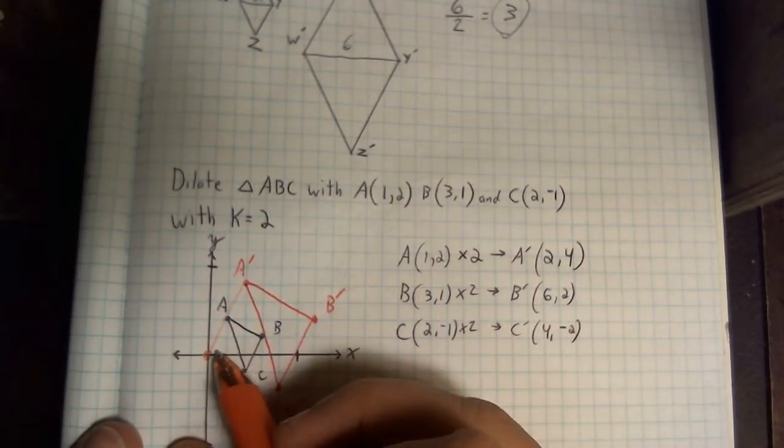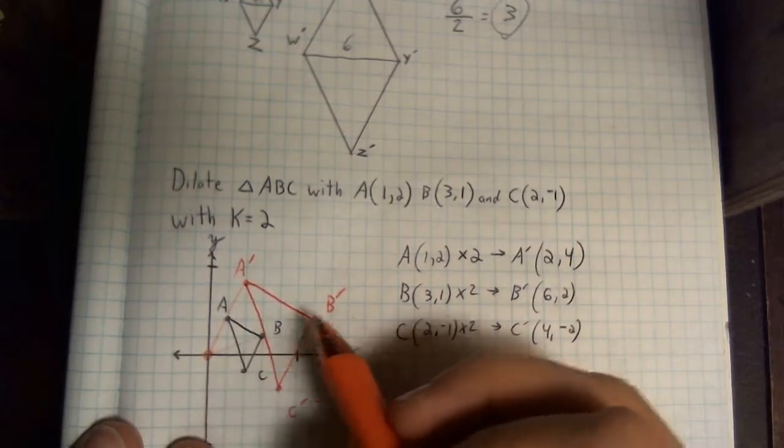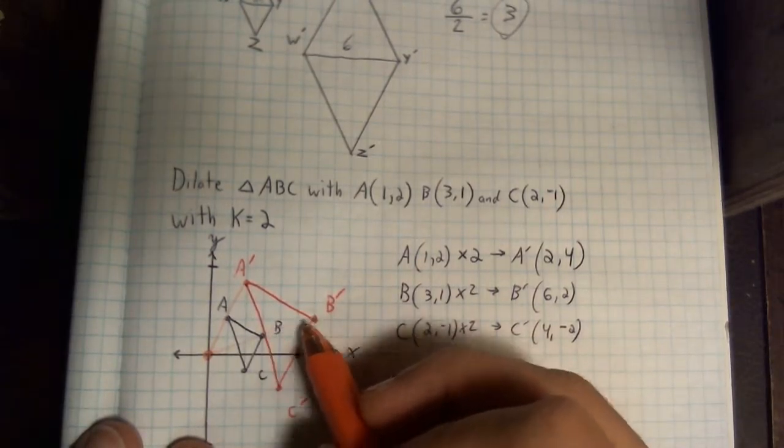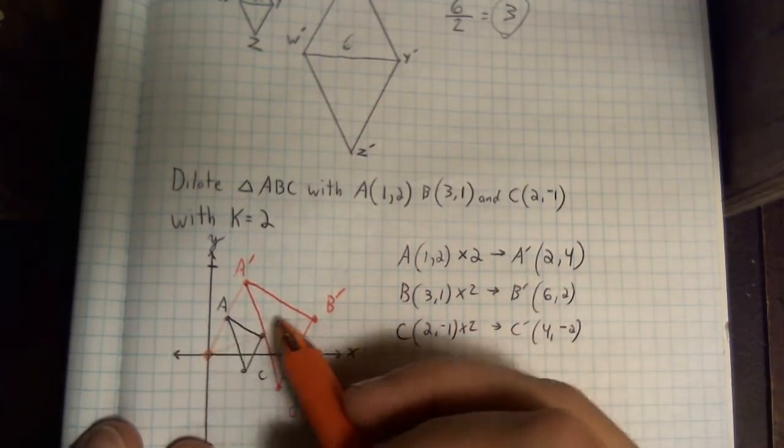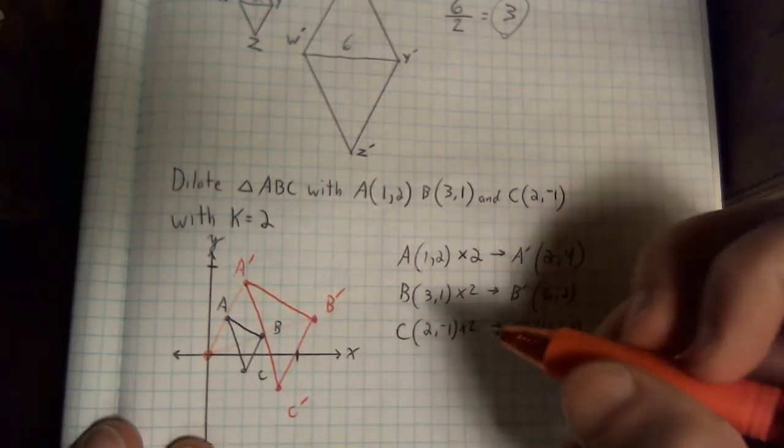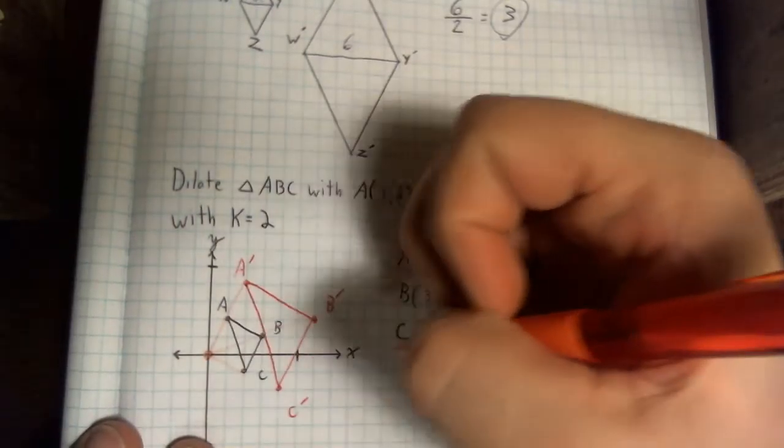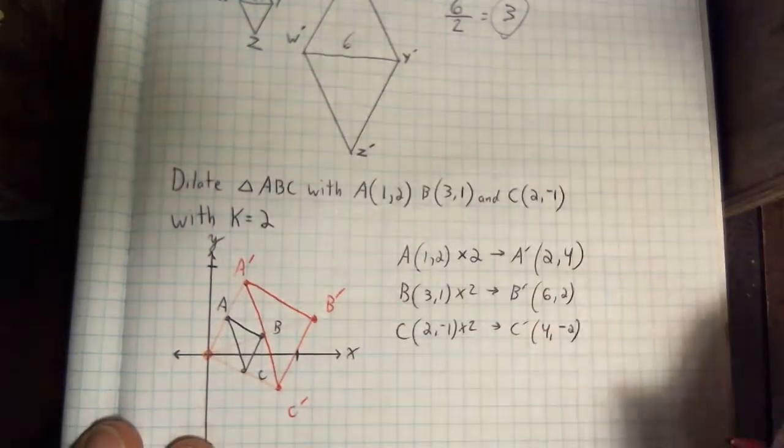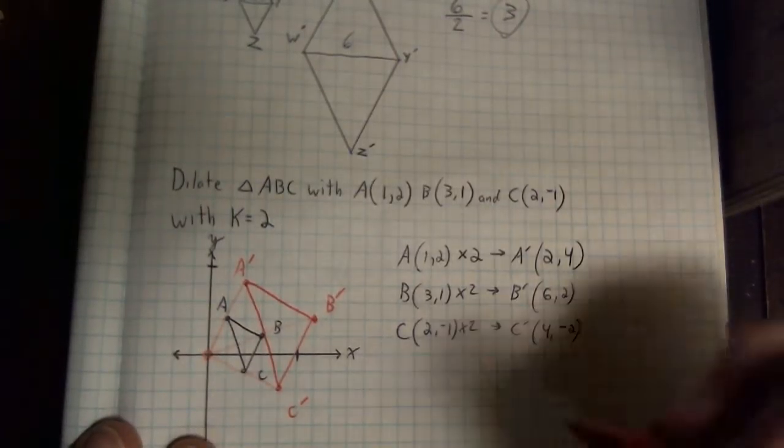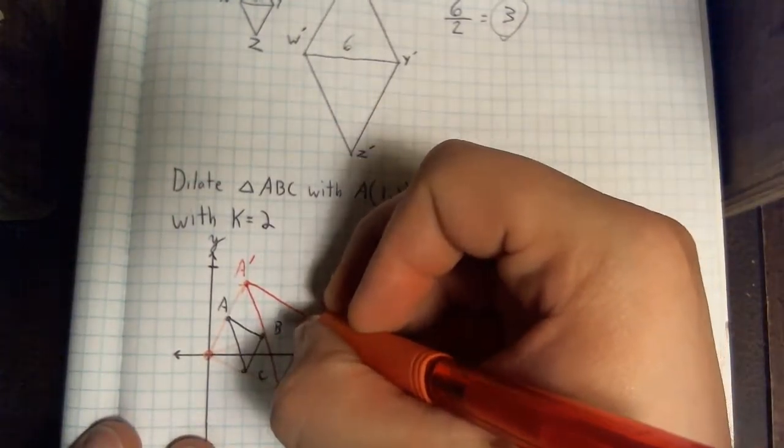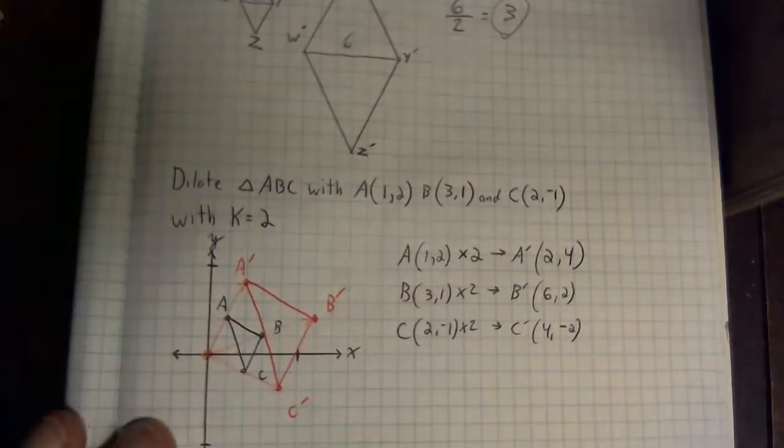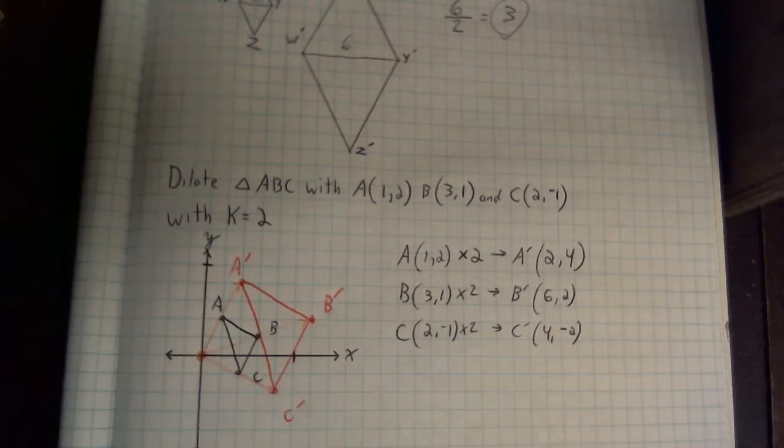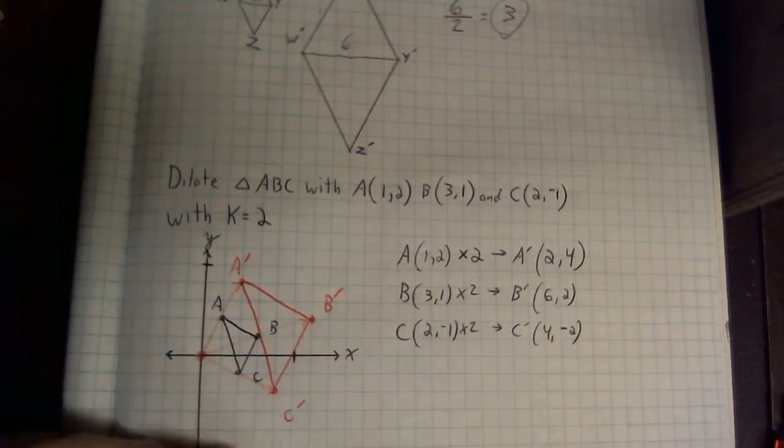Same idea here. Here we went one unit up and three units over. But to get to B prime, we went two units up and six units over. So everything has doubled. Same idea here. We went one down and two over. But to get to C prime, we went two down and four over. So even the distance has doubled. That's something else you want to keep in mind. The shape itself and the distances are all growing proportionally.